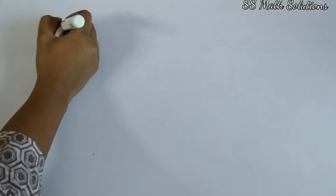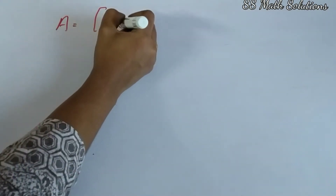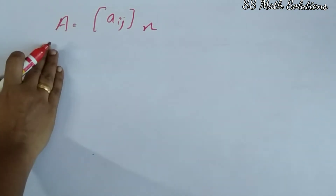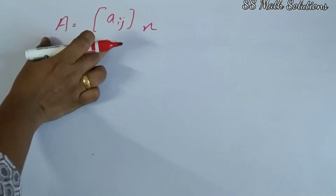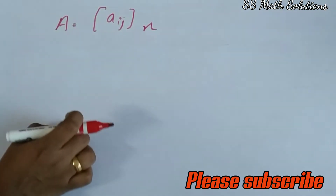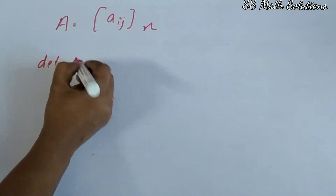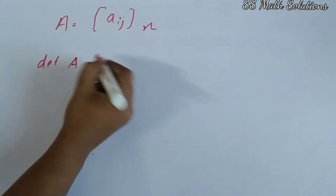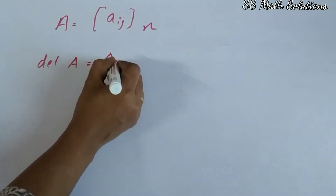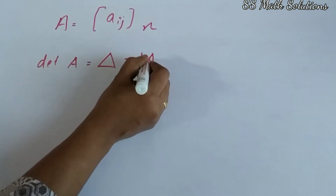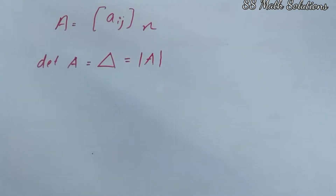So every square matrix A, generalized case Aij with order n — this matrix associates a determinant. We can denote the determinant by either det(A), or delta, or determinant of A. This way we can represent a determinant of A.